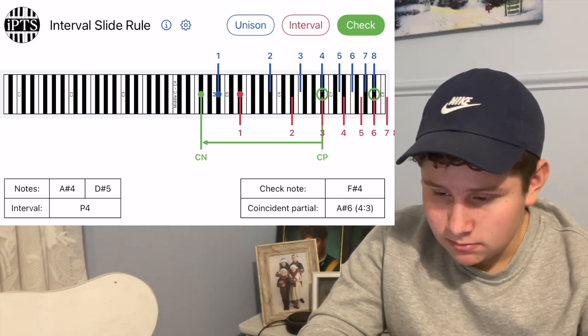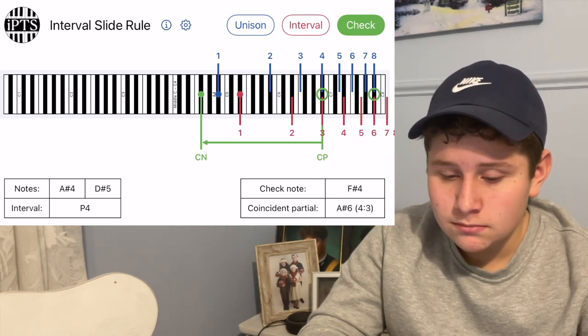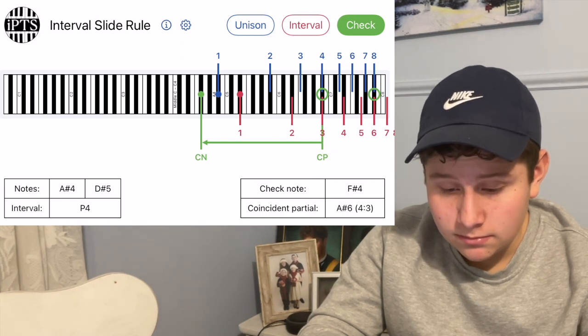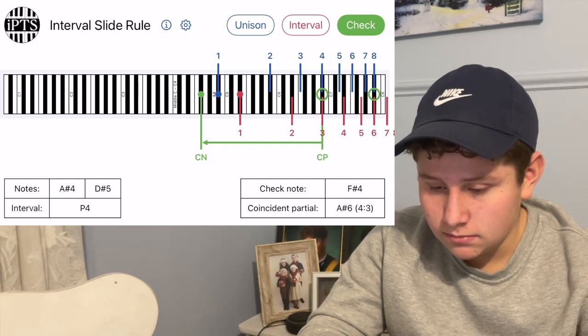So there you go. This young man here knows nothing about piano tuning. He just told us that the perfect fourth A-sharp 4, D-sharp 5 has a quintessential partial of A-sharp 6. Oh, A-sharp 6, yeah. A-sharp 6, and the check note for that perfect fourth is? F-sharp 4. F-sharp 4.